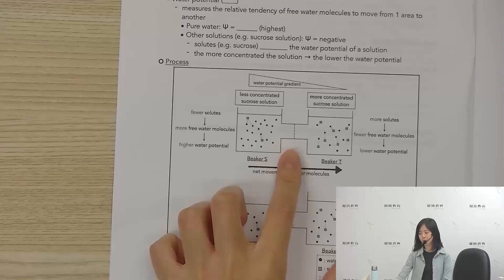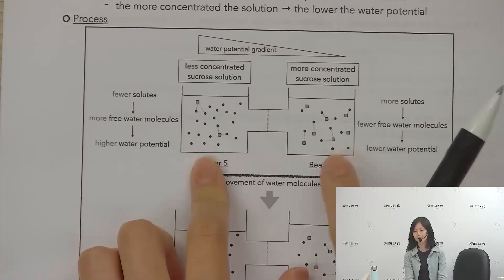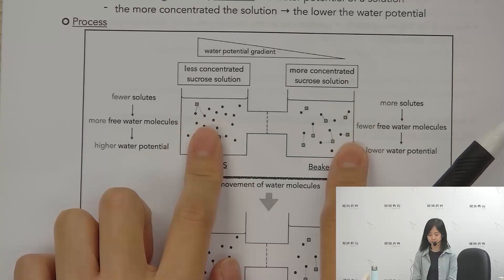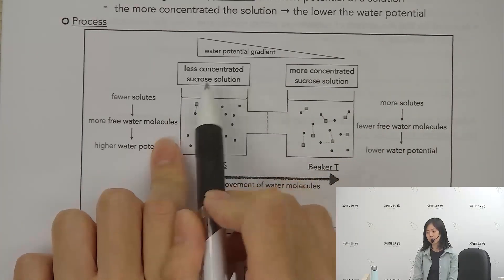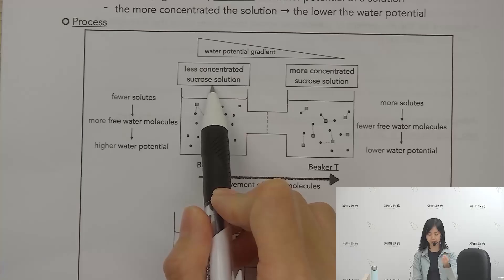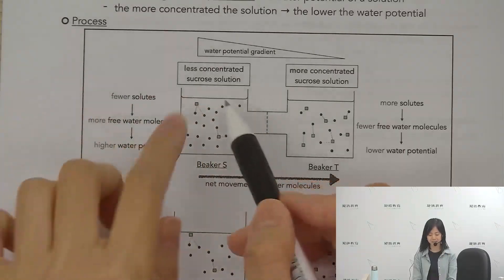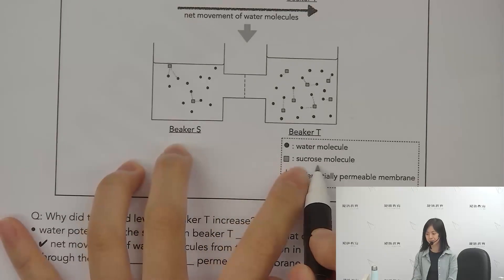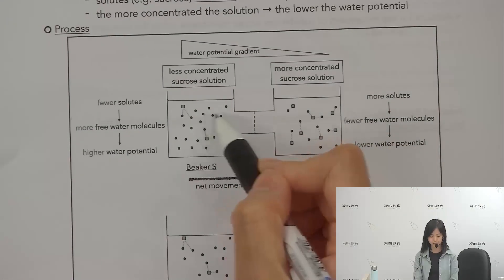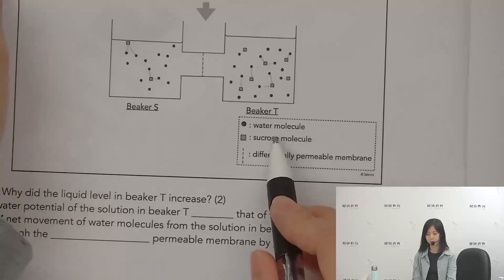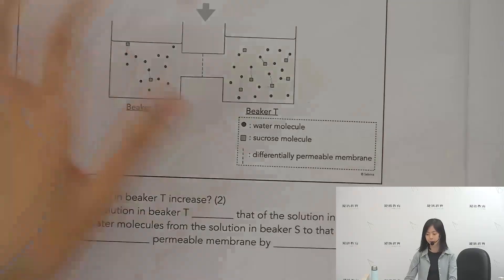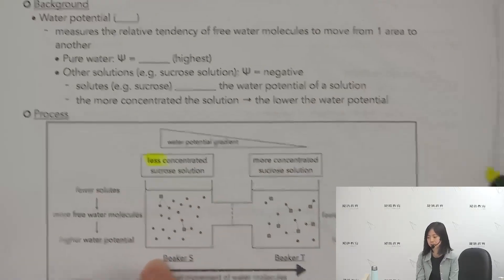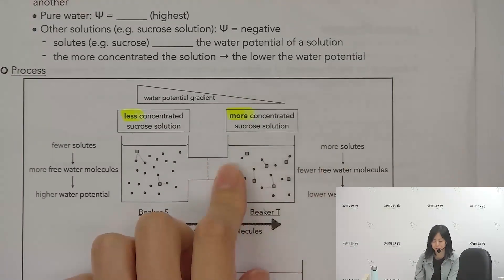We'll look at this graph. This graph is of two beakers: Beaker S and Beaker T. These two beakers all contain sucrose solutions. Sucrose is a sugar. The sucrose solution is in water. You can see the cell membrane on the right side, where the right side has water molecules. S is less concentrated than the sucrose solution, and T is more concentrated.